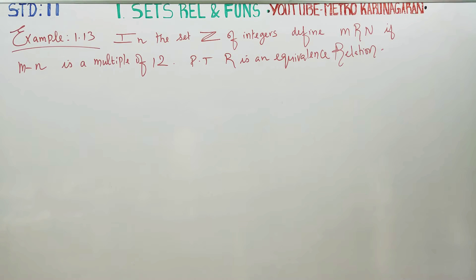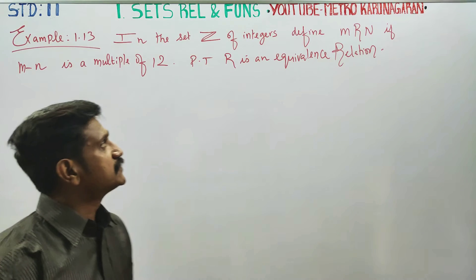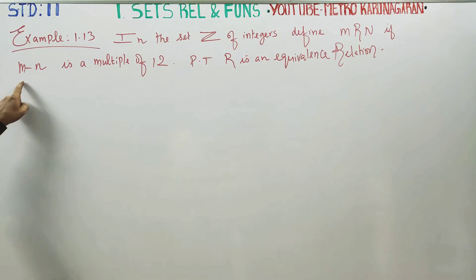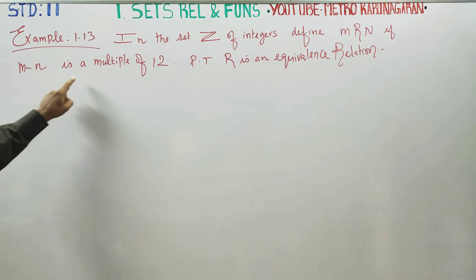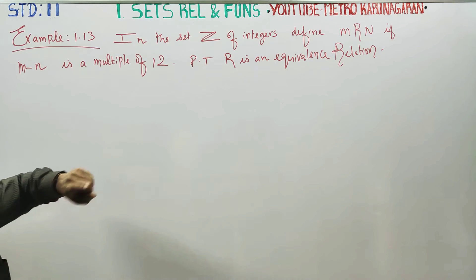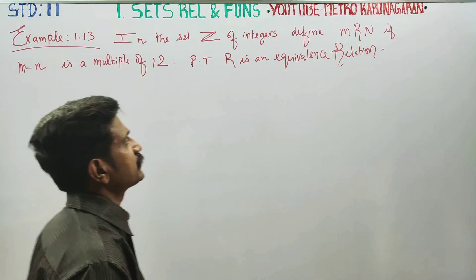Dear Learn Standard Students, I am Etroh Karnagaran. In Example 1.13, in the set of integers, define m, r, n. If m minus n is a multiple of 12, prove that r is an equivalence relation.